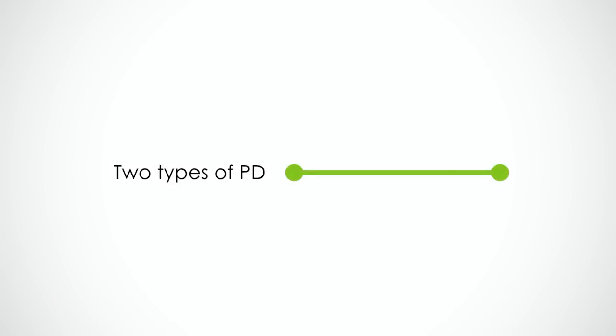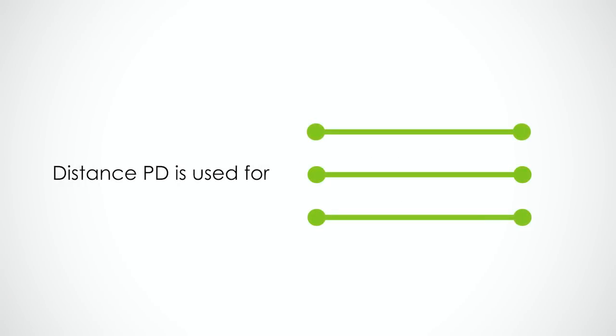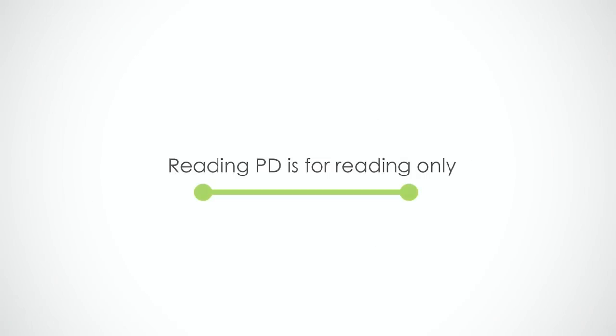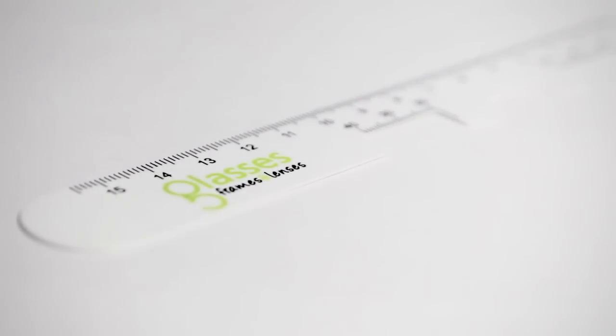There are two types of PD measurement, one for distance and one for reading. The distance PD measurement is used for distance, intermediate, bifocal or varifocal glasses. The reading PD measurement is only used for reading glasses. We will show you how to measure both types of PD measurement in this film.